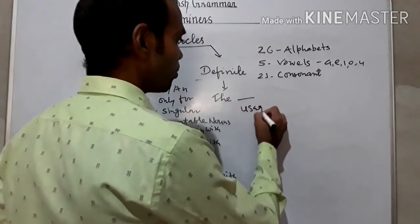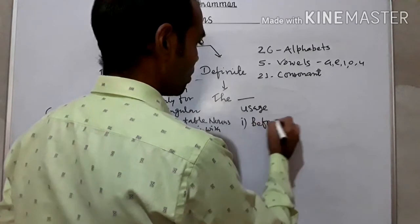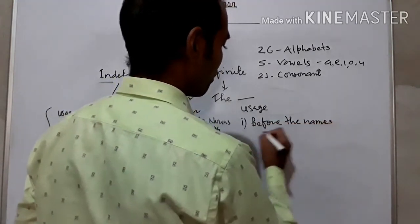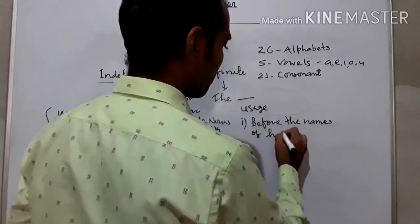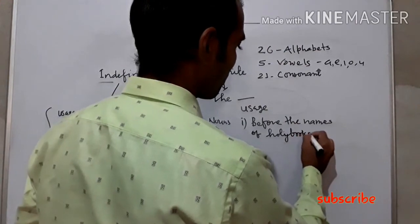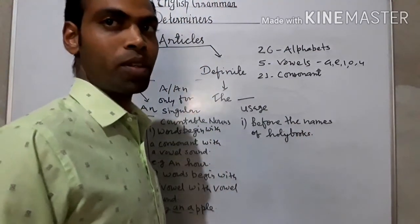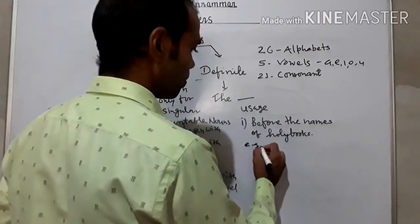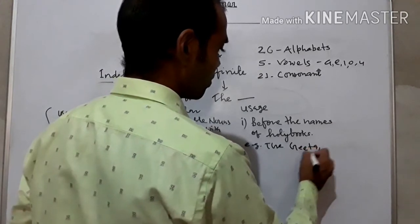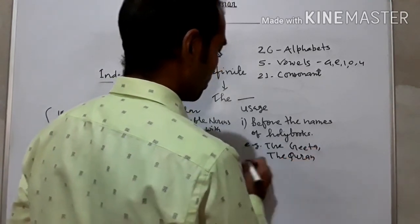Before the names of holy books, we use THE. For example: the Gita, the Quran. Then we use THE.